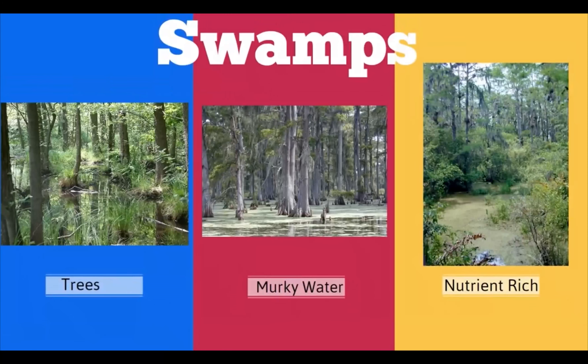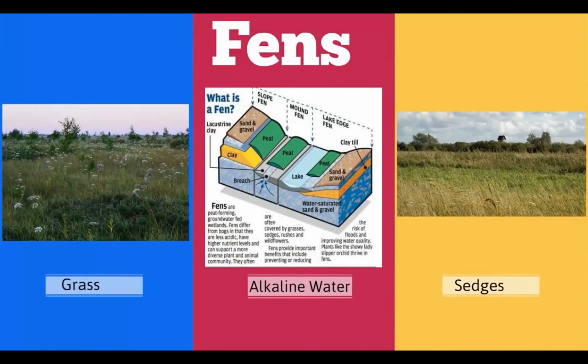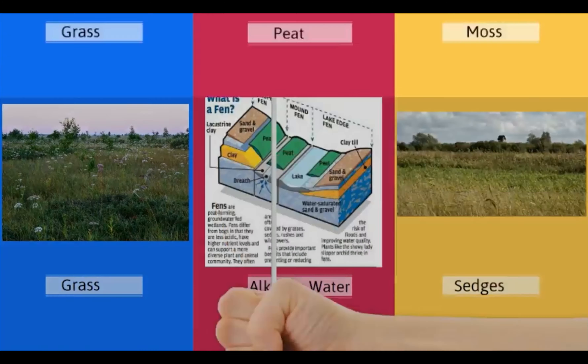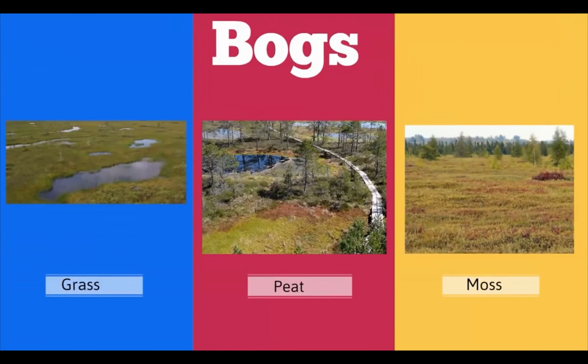Swamps are wetlands that have lots of trees. Fens are wetlands dominated by grasses. A bog is a wetland that accumulates peat, which is a deposit of dead plant material, and often you can find mosses in a bog.